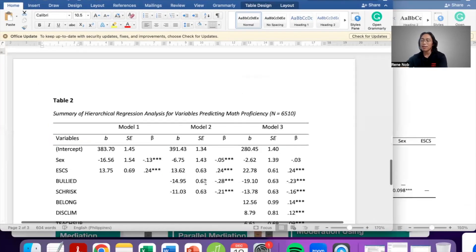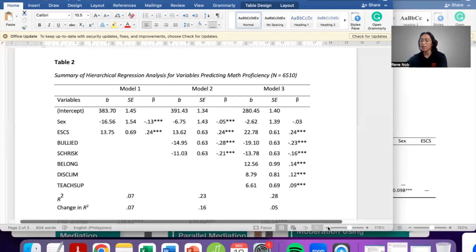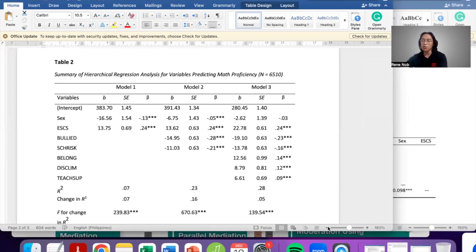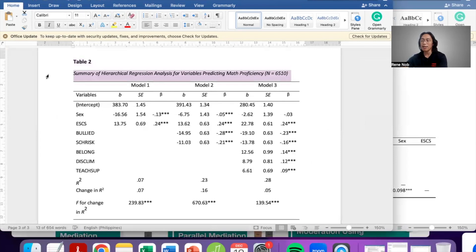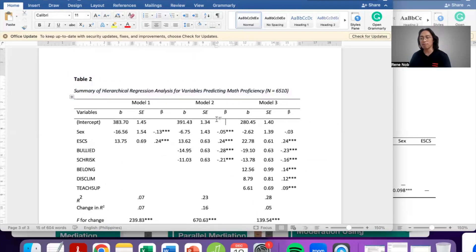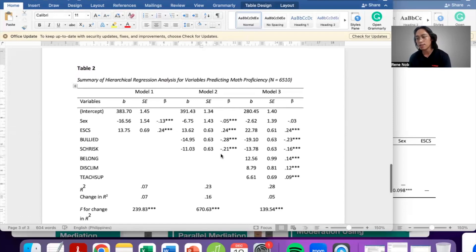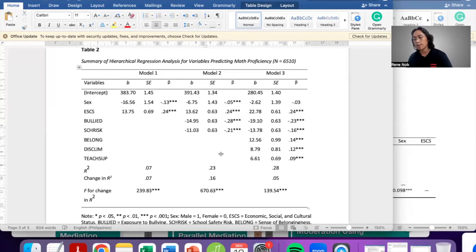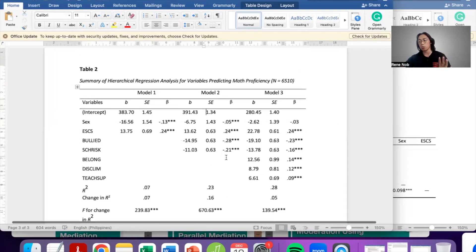Next one is the table for the hierarchical multiple regression. Again, same format: table 2, boldface, the table title in upper lower cases, italicized, then double spaces. What font should you use? APA suggests a variety of font types: Times New Roman, Arial, Calibri. Font size, for as long as it's readable, depending on the kind of information. For this, I think the font size is 11. So for as long as it fits the page well, then there's really no problem about it.